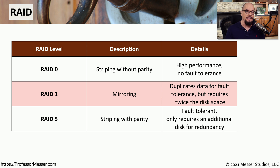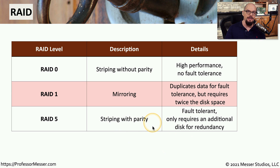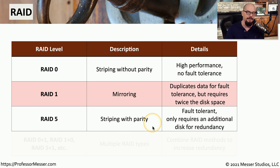Another redundancy type is RAID 5, where we have striping with parity. We're putting pieces of information on separate physical drives, and then on a last physical drive, we're putting some parity information. If we lose any of the drives on that particular array, it will rebuild the data based on the parity information that's put on that extra drive.